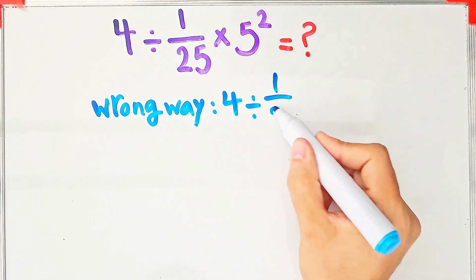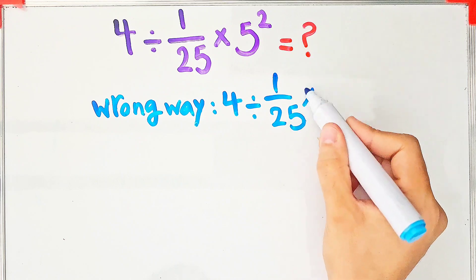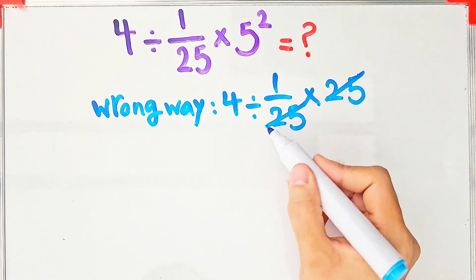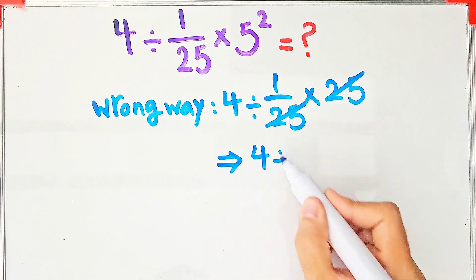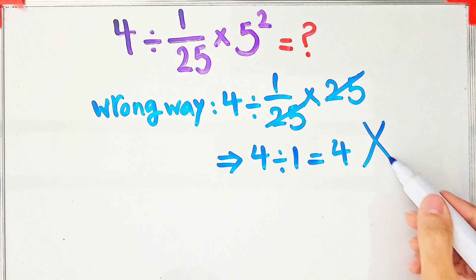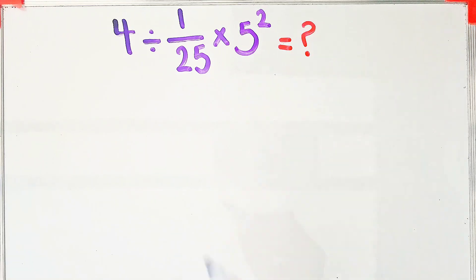Then times 25. They cancelled out the 25s and say the final answer equals 4 divided by 1, that equals 4. But this answer is definitely wrong. Let's solve it step by step together.